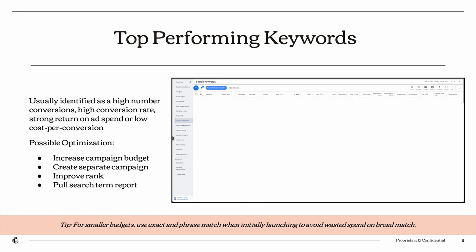Once I have my UI set up, I identify my top-performing keywords. This is specific to your business and based on how you measure search campaign success — typically a high number of conversions, high conversion rate, strong return on ad spend, or low cost per conversion. For example, if I care about conversion rate and my overall program converts at 10%, I'd identify any keyword above that 10% as top-performing. If that's too broad, I might narrow it to the top 20 or 25 keywords by conversion rate.